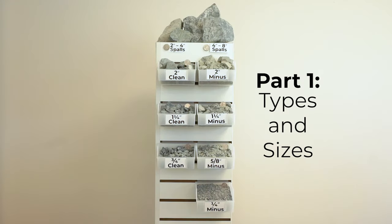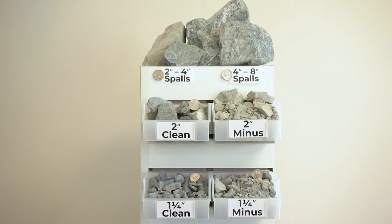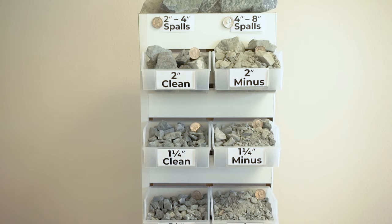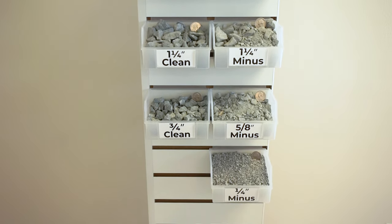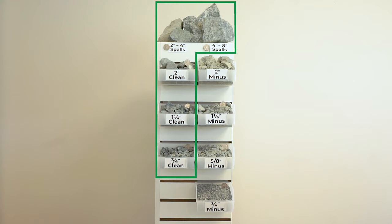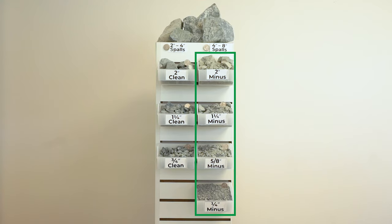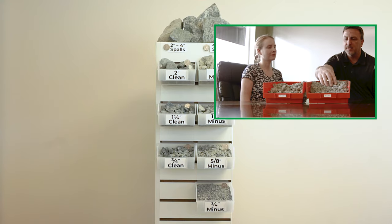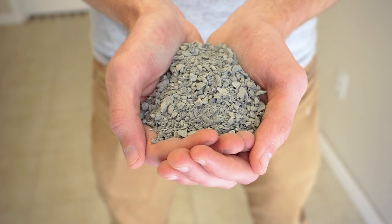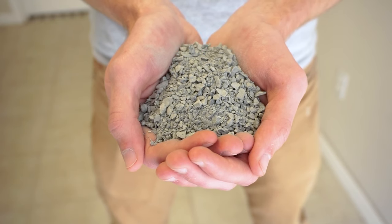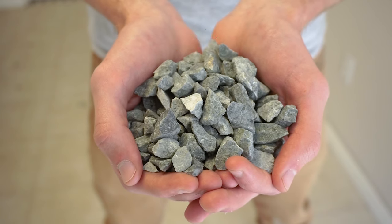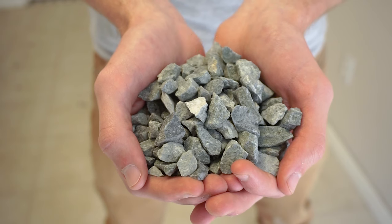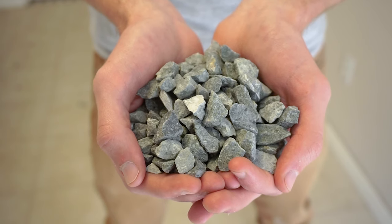These are our basic crushed rock product sizes starting with the largest at the top and the smallest at the bottom. To give a better idea of size there's a quarter next to each product. Clean products are on the left. Minus products are on the right. Minus products contain fines which are small particles that help the product compact. Clean products contain no fines. You'll also find that clean products tend to cost more because they take more water and resources to make.